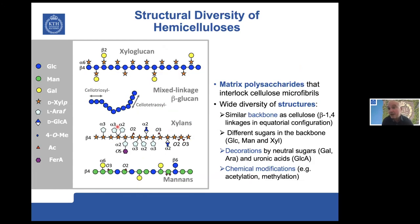We are mainly interested in hemicelluloses in my group. These are important components in plant cell walls — in some tissues, like cereal brans, they constitute up to 50% of the total composition. These hemicelluloses are matrix polysaccharides that interlock cellulose microfibrils, and they have a wide diversity of structures.